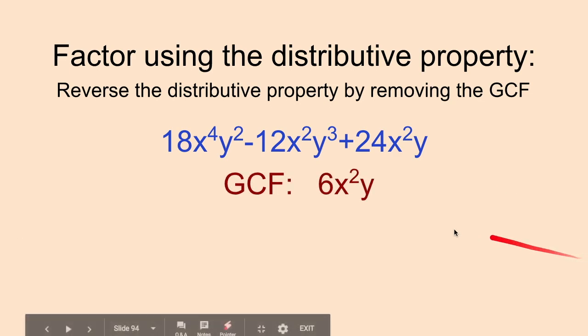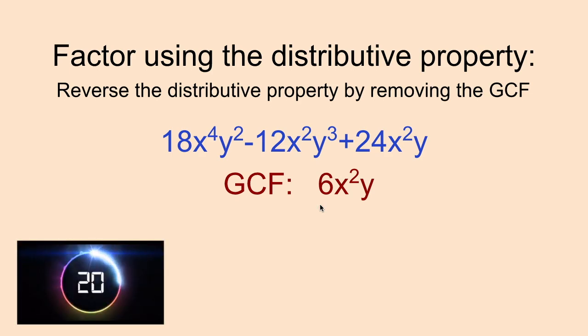And here is our GCF. We could remove a 6 from 18, 12, and 24. So we have our 6 here. Out of the x's, this one has x⁴, x², and x². So we can remove an x² from all three of the terms. And then when we look at the y term, we can only remove a single y because this last term only has one y in it. So now we have our GCF of 6x²y. Now we need to figure out if we remove that from each term, what would remain?